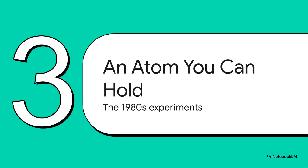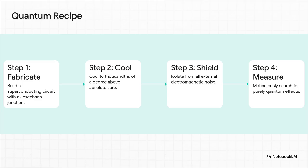All right, let's get to the experiments themselves. This is where it all came together in the 1980s. This is the story of how they built an atom that you could quite literally hold in your hand. Now, the challenge here was just immense. I mean, they had to build this tiny superconducting circuit, and cool it down to just a few thousandths of a degree above absolute zero. We're talking colder than deep space. And then, they had to shield it from literally all external noise. They basically had to create one of the quietest, coldest places in the entire universe, just so they could hear the faint whisper of the quantum world.